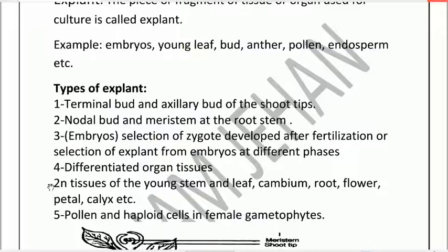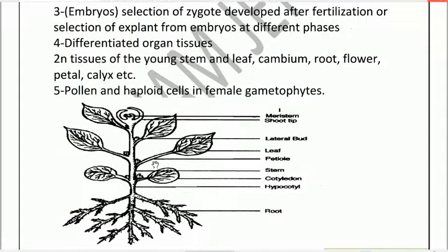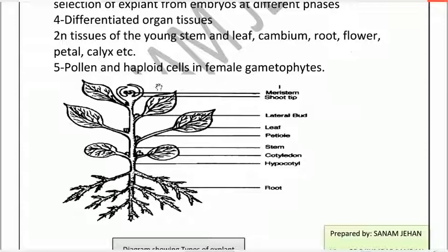The tissues used for culture include tissue of the young stem, leaf, cambium, root, flower petal, calyx, etc. Young stem fragments, young leaf fragments, cambium fragments, root fragments, flower petals, and calyx are all deployed as explant tissue. For haploid cells, explants from the female gametophyte can also be used in culture media.